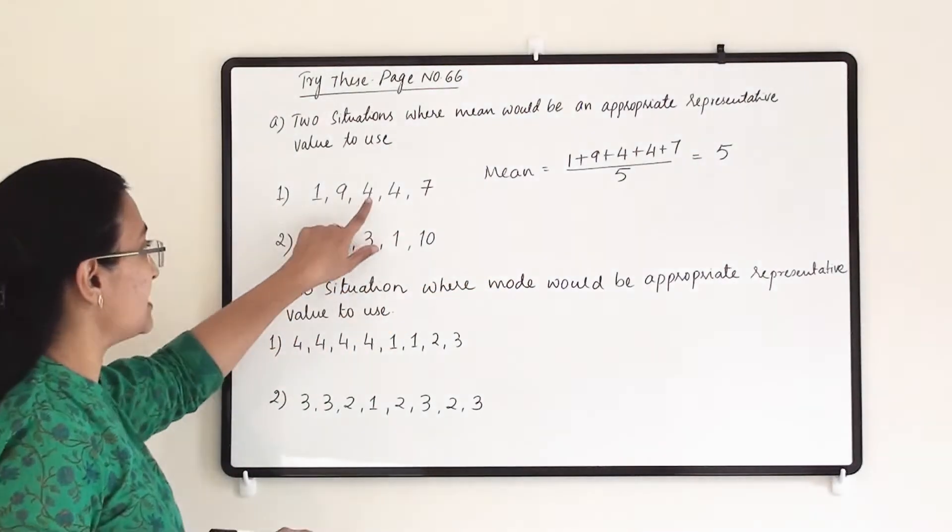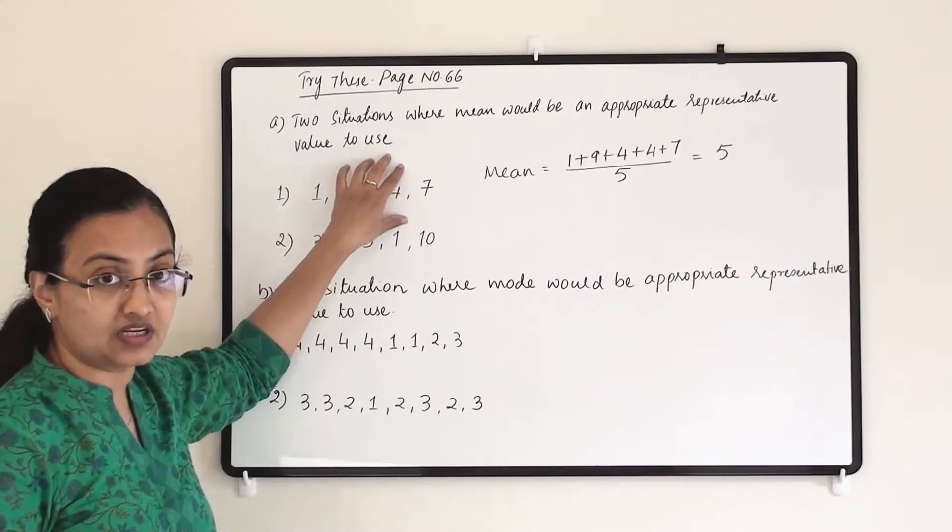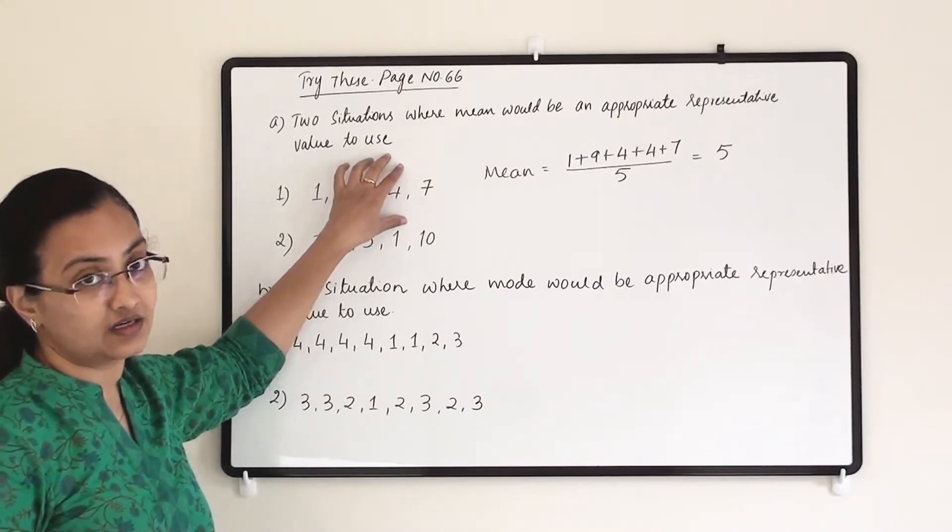But if we write a mode, then we will get 4. So in this particular set of data, mean is the correct representative.